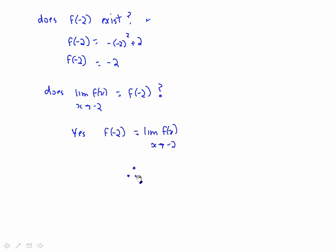Therefore, f(x) is continuous at x = −2, but discontinuous at x = 0. Tedious work, but very reliable. If you did graph this one, you could see clearly what's going on. The next lesson will move on to infinite limits, which is a fairly straightforward topic. Thank you for your time.